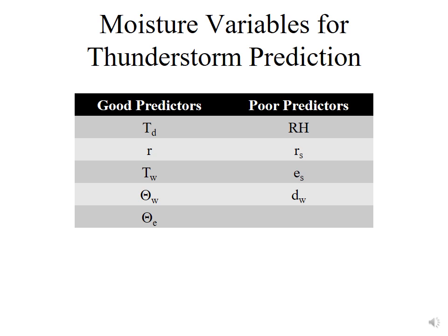Precipitable water you would think would be a really good predictor, but precipitable water is an integrated variable over the depth of the troposphere. It's possible that you could have high precipitable water and still have low moisture in the boundary layer if you have elevated moist layers. That would not be good for thunderstorm formation because we really need to have lift of moisture from lower altitudes.